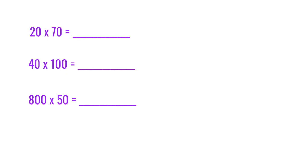Sometimes there will be zeros in both factors. So here are some examples of that. The first one is 20 times 70. So our basic fact would be 2 times 7, which is 14. And now we have a zero from the 20 and a zero from the 70. So we have two zeros for 1,400.